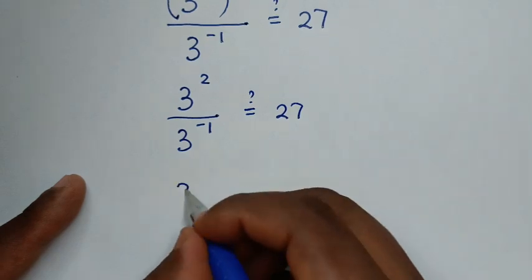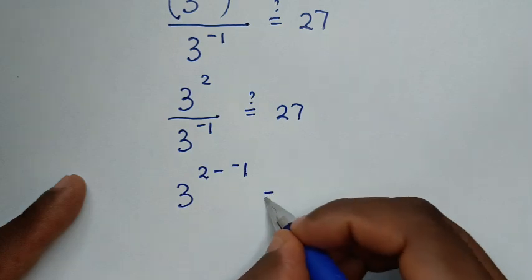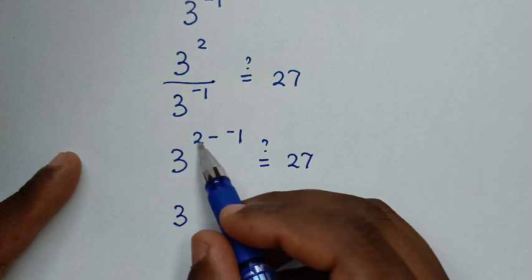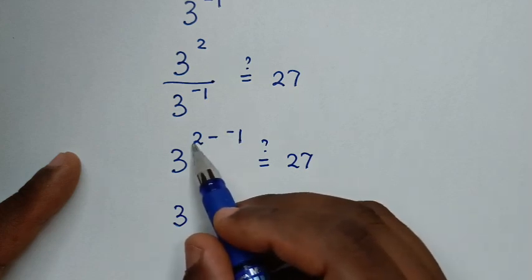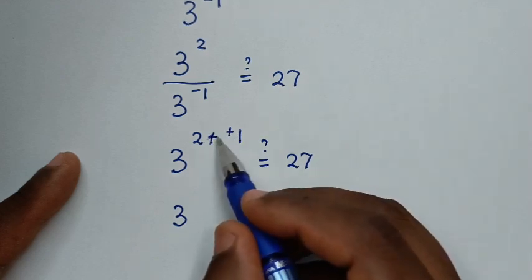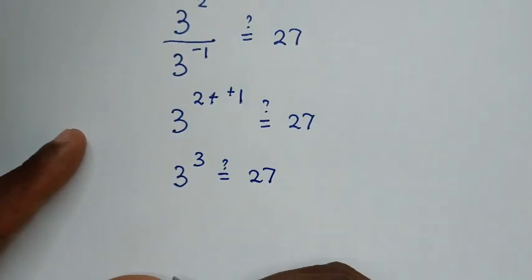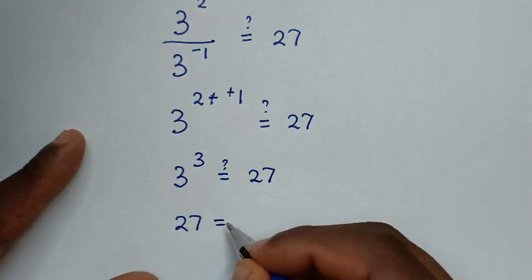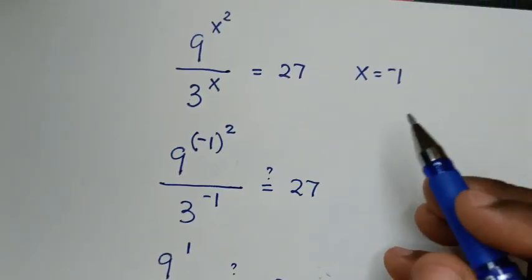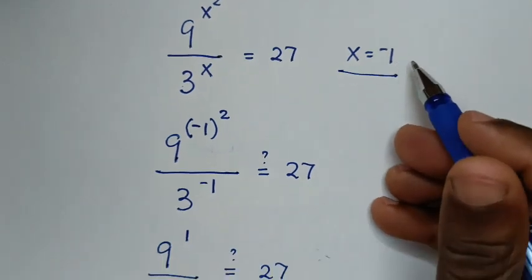Applying the division rule, we subtract exponents: 2 minus negative 1, which equals 2 plus 1, giving 3 to the power of 3. Since 3 to the power of 3 is 27, which equals 27, the left side and right side are equal. So x equals negative 1 is also confirmed correct.